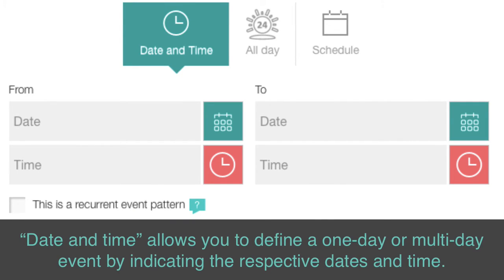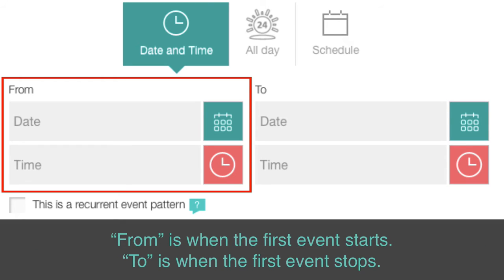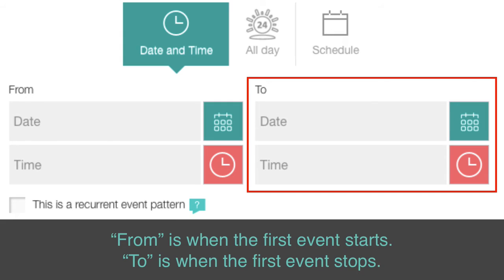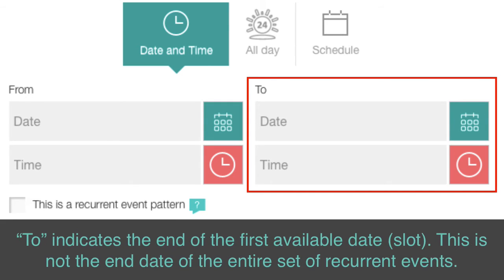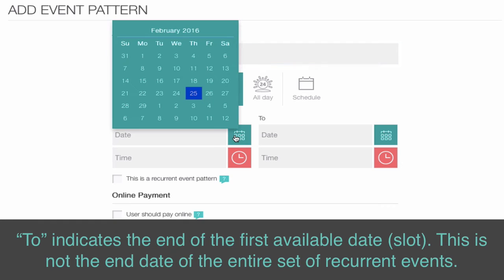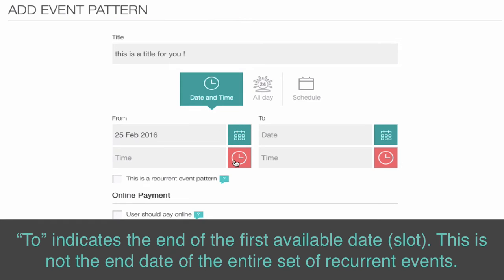Date and time allows you to define a one-day or multi-day event by indicating the respective dates and time. From is when the first event starts. To is when the first event stops — it indicates the end of the first available date or slot, not the end date of the entire set of recurrent events.